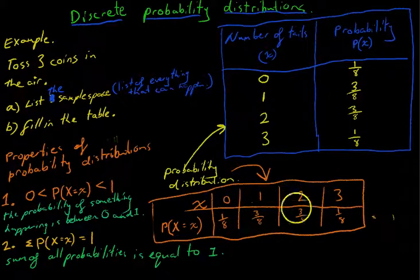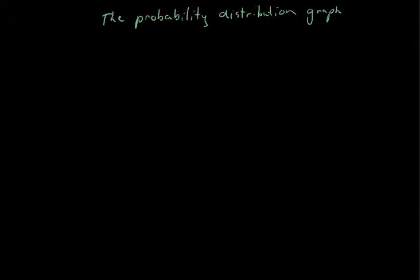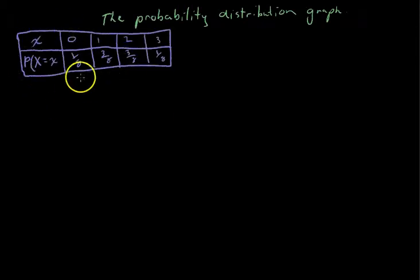0: 1/8, 1: 3/8, 2: 3/8, 3: 1/8. We'll just replicate that here. The probability of getting 0 tails is 1/8, 1 tail is 3/8, 2 tails is 3/8, and 3 tails is 1/8.